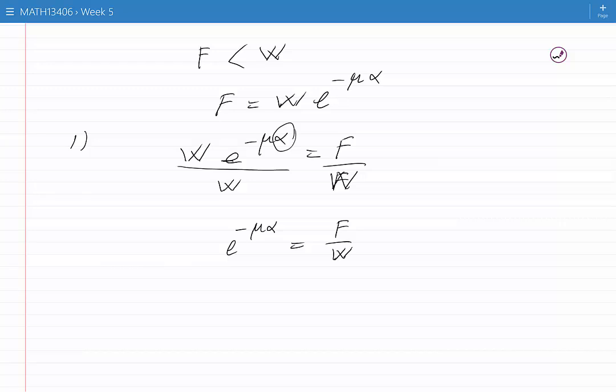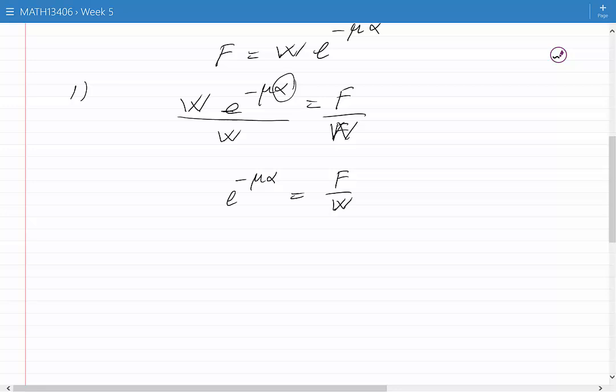Now how would you isolate alpha in this situation? We pay attention that this equation looks like this equation: B to the power of a is equal to C. We remember that this can be written as A is equal to log C base B.